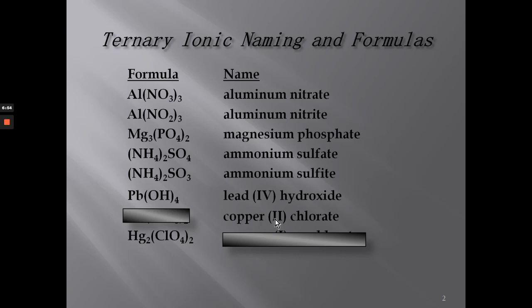Here we have copper(II) chlorate. Copper is plus two and chlorate is minus one. That means I need parentheses around ClO₃ with a subscript of two in order to make the charges cancel: plus two minus two equals zero.